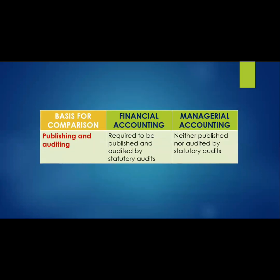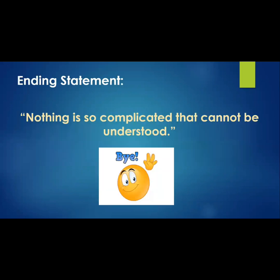For publishing and auditing, financial accounting is required to be published and audited by statutory audits. For managerial accounting, it is neither published nor audited by statutory audits. That's a brief discussion of the differences between financial accounting and management accounting. If you like this video, please subscribe and hit the bell button for the latest updates.